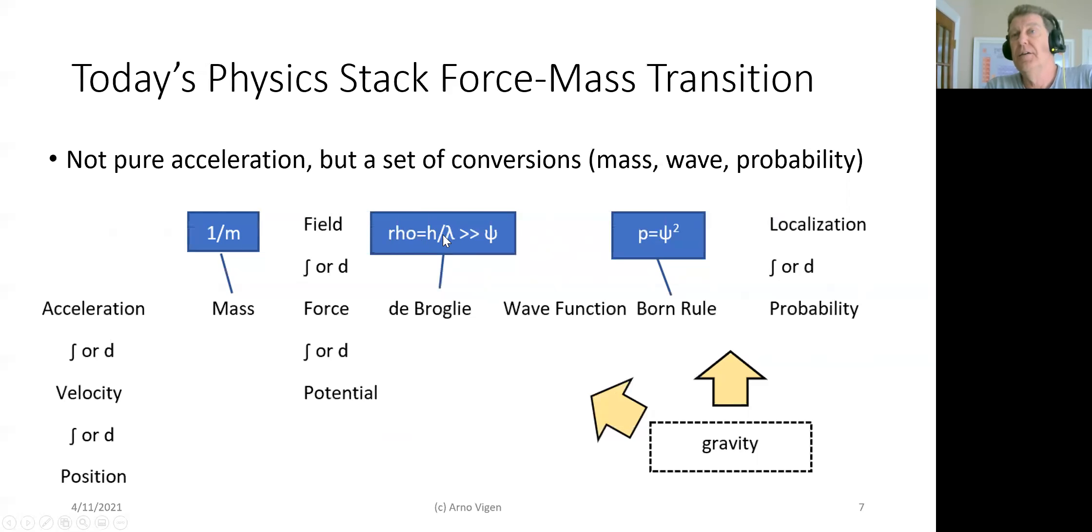And then that force also has fields and potentials as it's up and down. And then de Broglie had a transition, which divided that H, which is Planck's constant, by that to get a wave function.